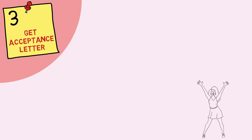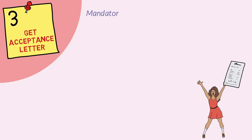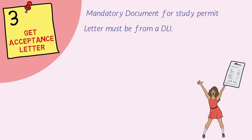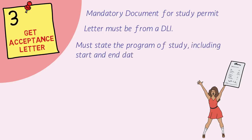The third step is getting your acceptance letter. This step is crucial because the acceptance letter is the mandatory document for your study permit — without it from a university or college, you cannot get a study permit. The acceptance letter must be from a DLI college. DLI stands for Designated Learning Institution. If a college or university is a DLI, it will be clearly mentioned on their website. The acceptance letter must also state the program of study including the start and end dates.